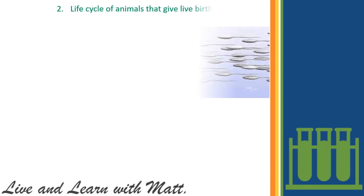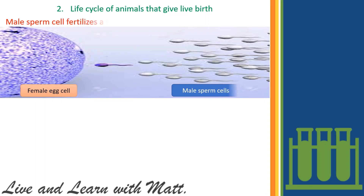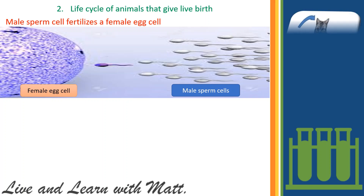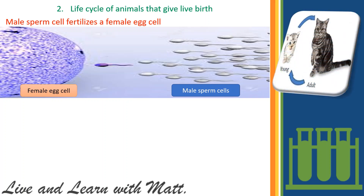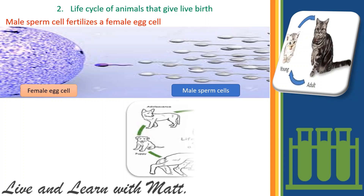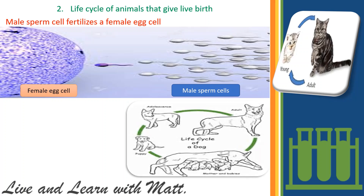Number two: the life circle of animals that give live birth. The male sperm cell fertilizes the egg cell in a female. The female becomes pregnant, then she gives birth to a young after some time. The young looks the same as its parents but much smaller. They will go through many changes before they are fully grown.